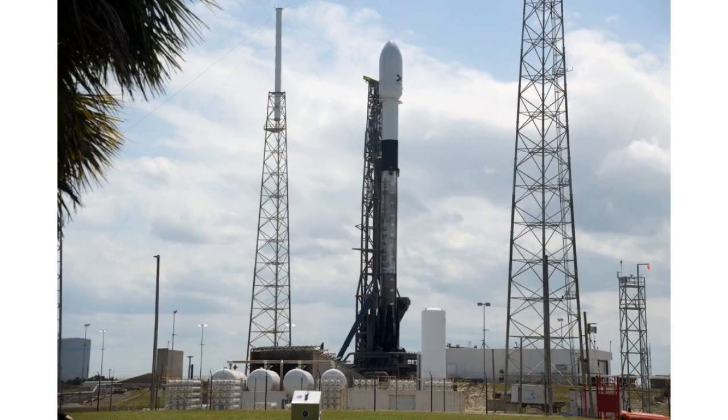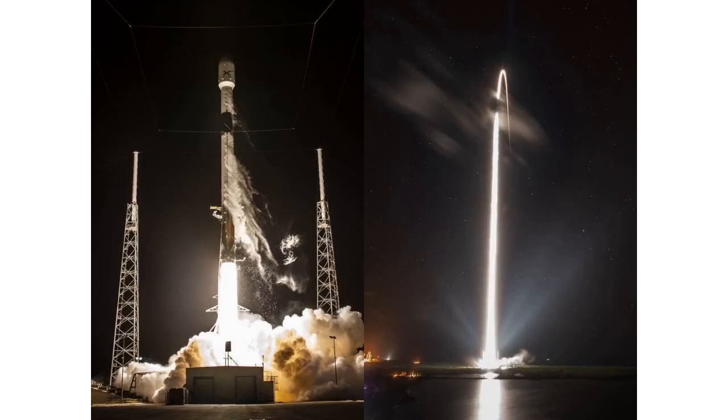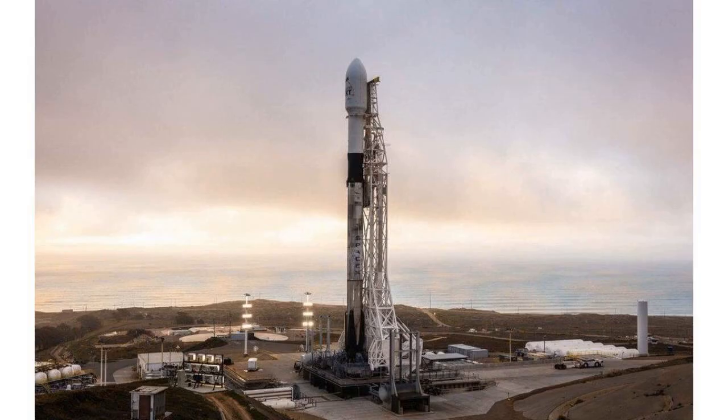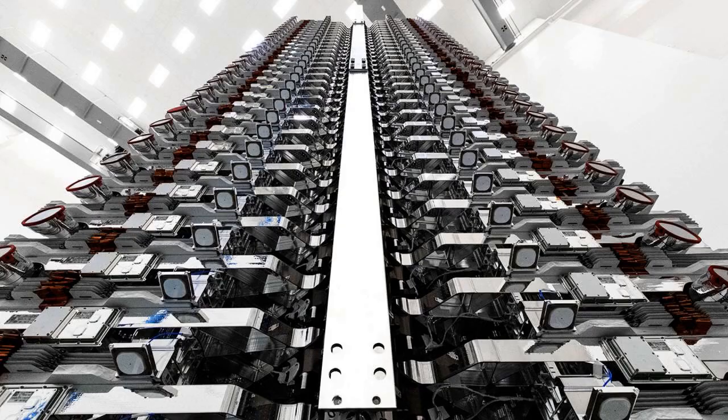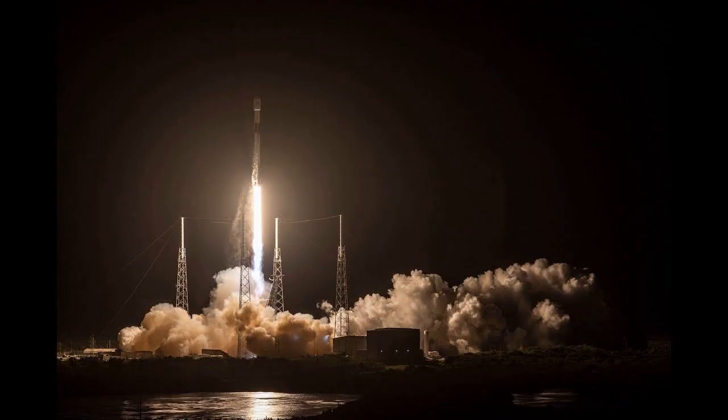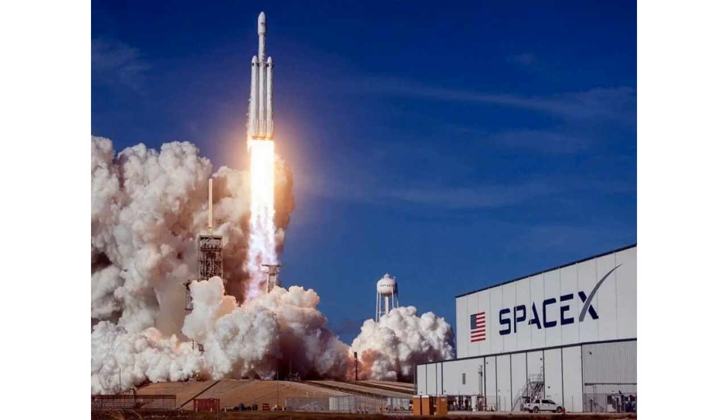These 60 satellites, launched on May 23, were just the first of nearly 12,000 satellites that SpaceX plans to put into orbit around Earth. The company received permission from the Federal Communications Commission to launch one batch of 4,409 satellites, followed by another constellation of 7,518.